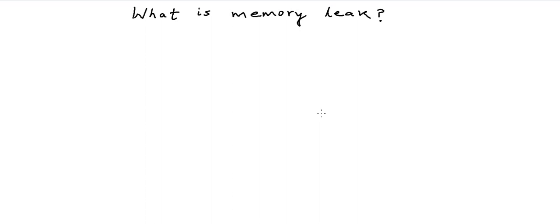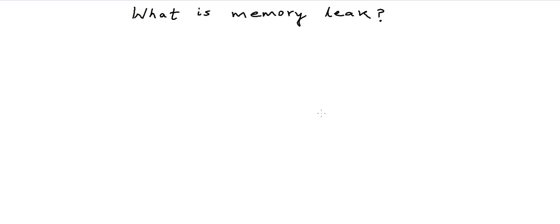A quick recap of some of the concepts discussed in our previous lessons. The memory allocated for the execution of a program — what we also call applications memory — is typically divided into four segments or sections. One section stores the instructions in the program that need to be executed; this is called the code segment or the text segment. Another section stores the global variables — variables not declared inside functions that have a lifetime of the whole application. Another section is used to execute function calls and store all local variables; this section is called the stack.